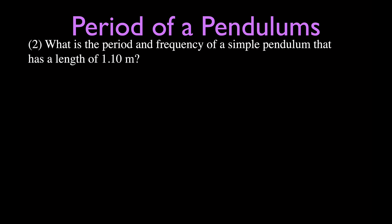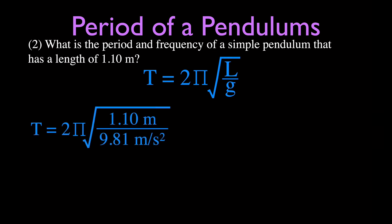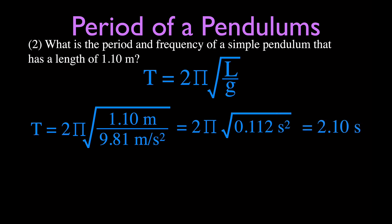Problem 2: What is the period and frequency of a simple pendulum with a length of 1.1 meters? This time we're not given time and cycles, so we use the equation T = 2π√(L/g). Plugging in: 2π times the square root of 1.1 meters divided by 9.81 m/s². Dividing 1.1 by 9.81 gives approximately 0.112, and taking the square root and multiplying by 2π gives a period of 2.10 seconds.